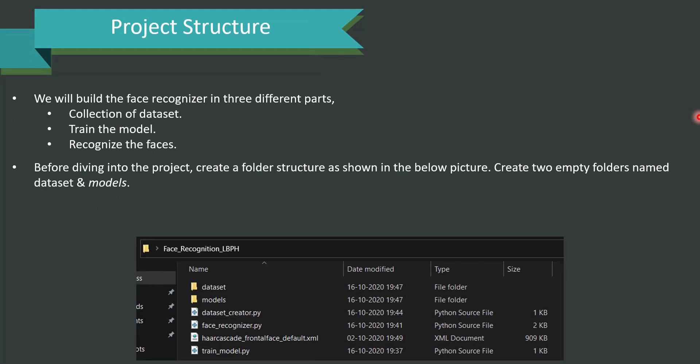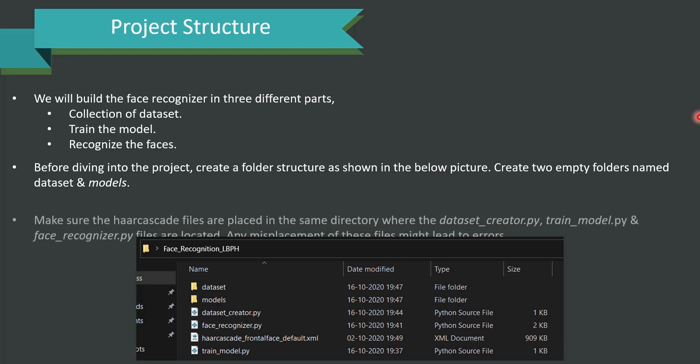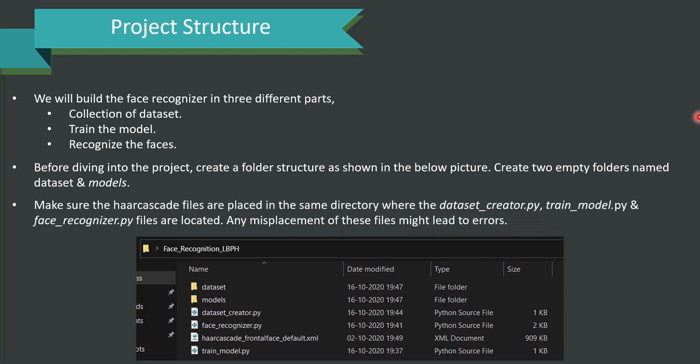Before diving into the project, it is important to get a structure created. Create a folder structure as presented in front of you. You have to create two empty folders named dataset and models. Also, make sure that the files dataset_creator.py, train_model.py and face_recognizer.py are all kept in the appropriate location as presented in front of you. Any misplacement would lead to errors.